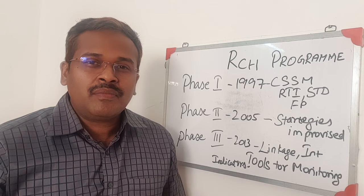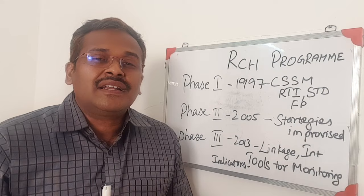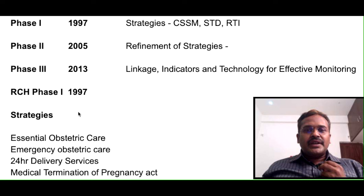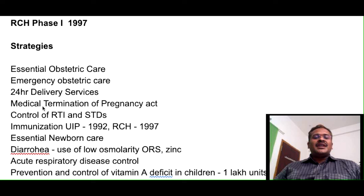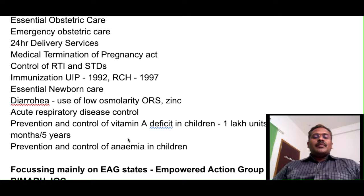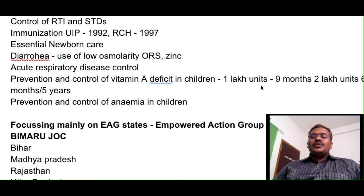Now we will get into the details about the important points for your answer. RCH phase 1 started in 1997. Strategies under phase 1 include: essential obstetric care, emergency obstetric care, 24-hour delivery services, medical termination of pregnancy act implementation, control of reproductive tract infections and sexually transmitted diseases, immunization under universal immunization program (1992), ORS and zinc, acute respiratory diseases control, and prevention and control of vitamin A deficiency in children — giving 1 lakh units.